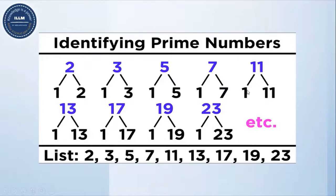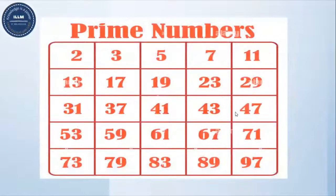Eleven is also having two factors: one and eleven. Thirteen is also having two factors: one and thirteen. Seventeen is also having two factors: one and seventeen. Nineteen is also having two factors: one and nineteen. Twenty-three is also having two factors: one and twenty-three. So all these numbers are having only two factors — one and itself — so they are called prime numbers.